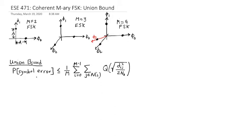So the union bound again says that we use this formula. We look at the neighbors of I, the neighbors of each symbol. And so let's think about that.